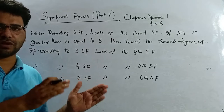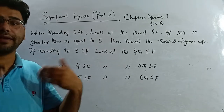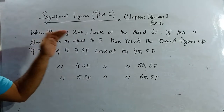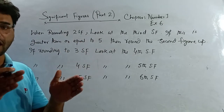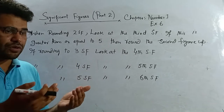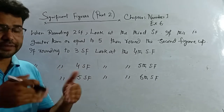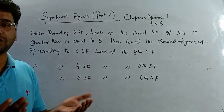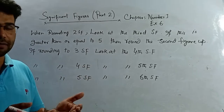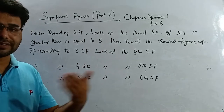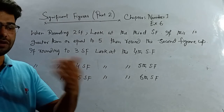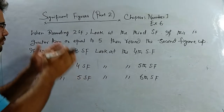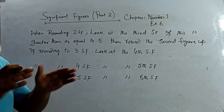In the last video I explained how many significant figures are in a particular number. Here we will understand: if we are asked to write a number corrected to two significant figures, corrected to three significant figures, or corrected to four significant figures, how do we do that? What is the rule? That is what we are going to understand here.